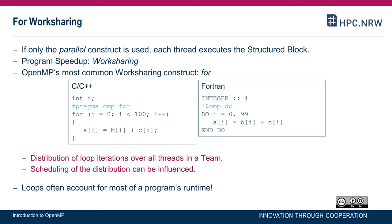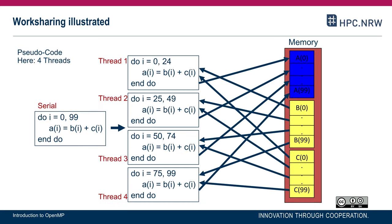Why is the FOR work sharing construct the most important one? Well, in many programs — at least in scientific and technical programs — loops account for most of the program's runtime. So if we parallelize a loop as shown here: assuming we have a serial code, there would be one thread that executes iterations from 0 to 99 and performs the element-wise addition.